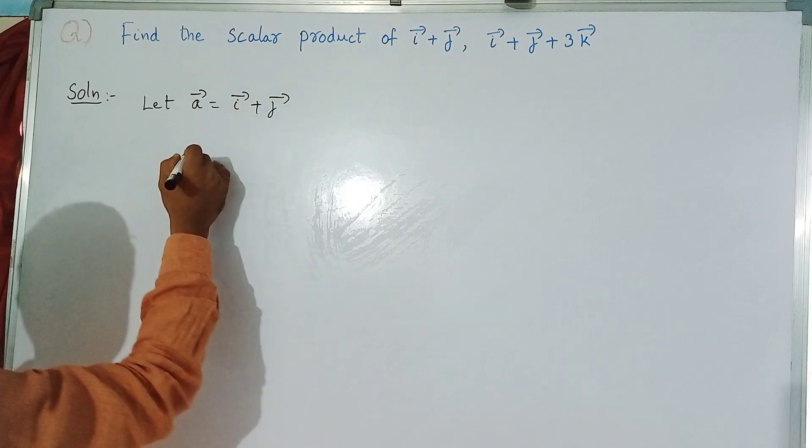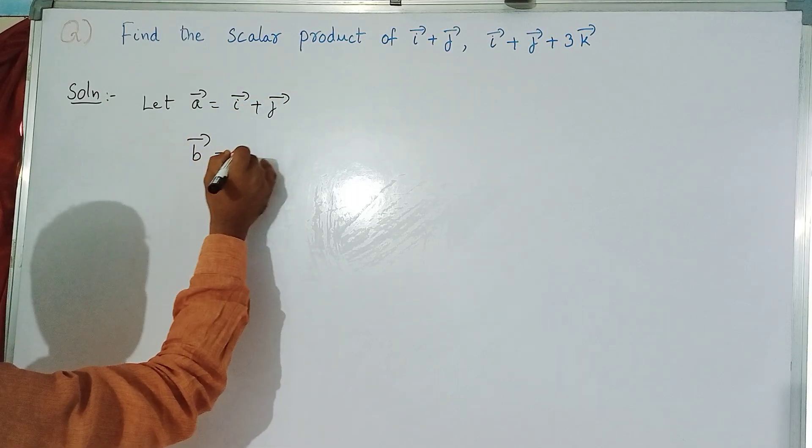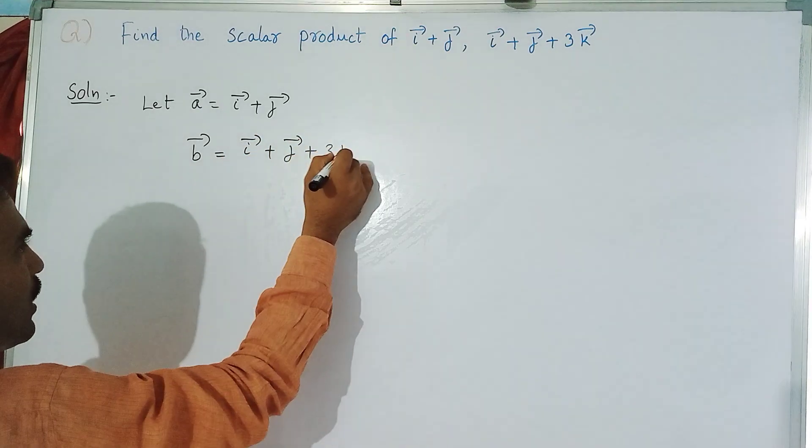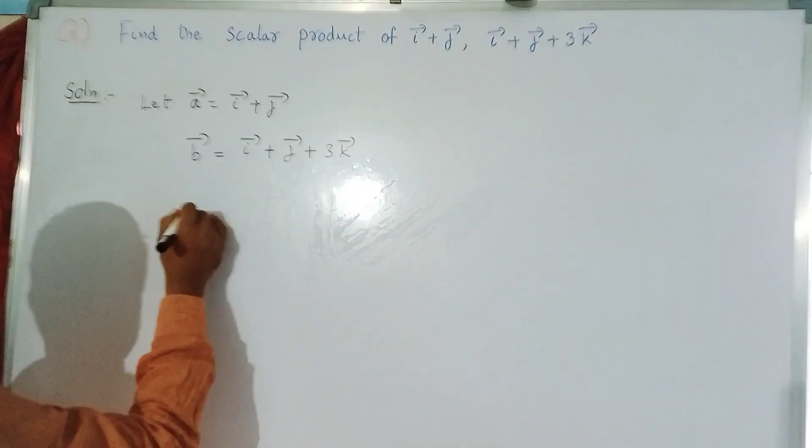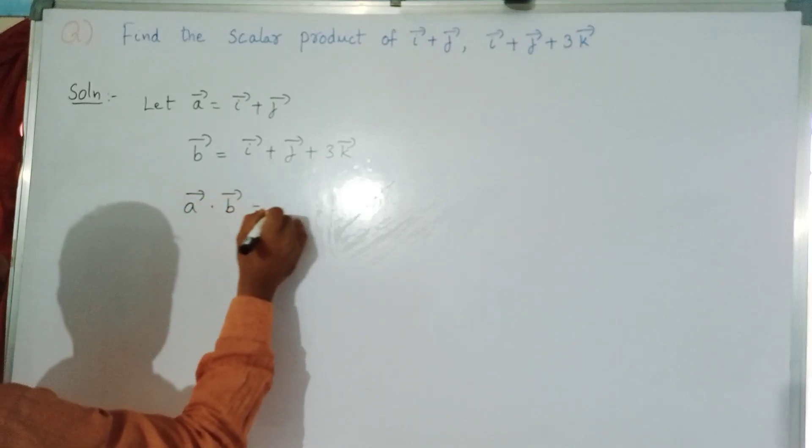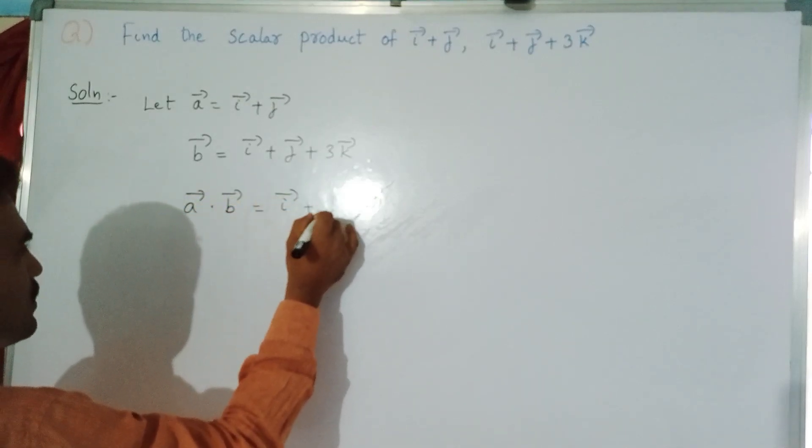And the second vector is b bar, that is i bar plus j bar plus 3k bar. We have to do scalar product, that is a bar dot b bar equal to i bar plus j bar dot i bar plus j bar plus 3k bar.